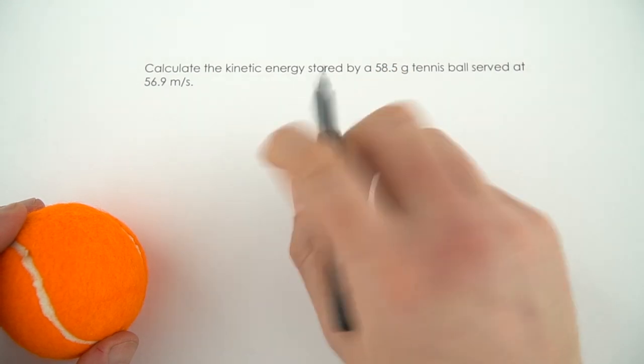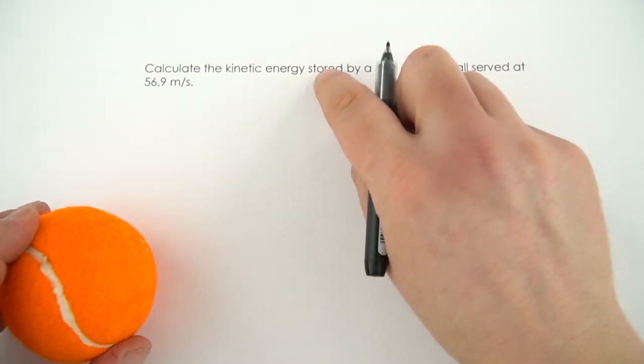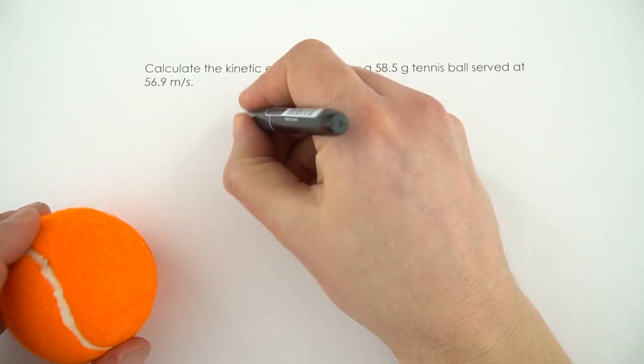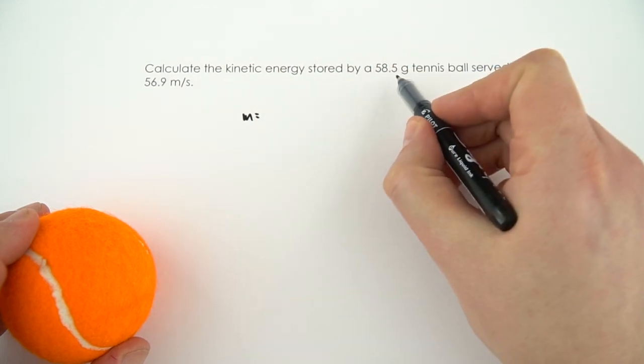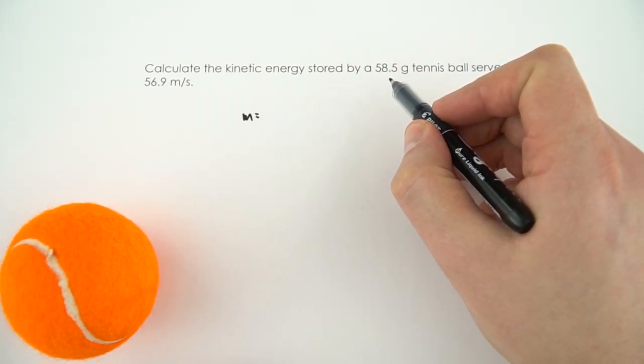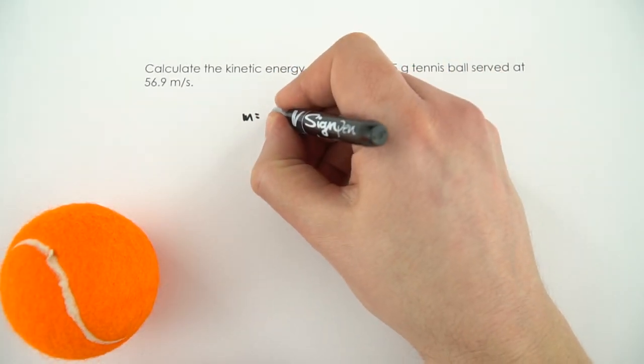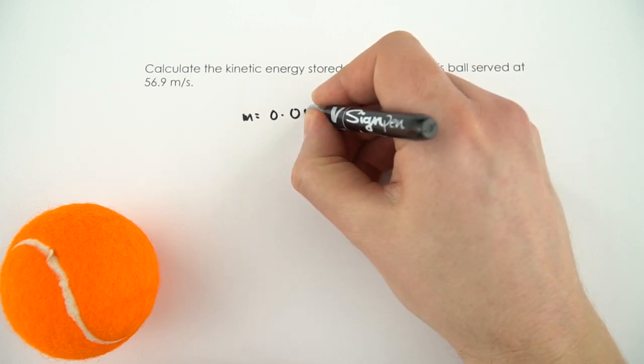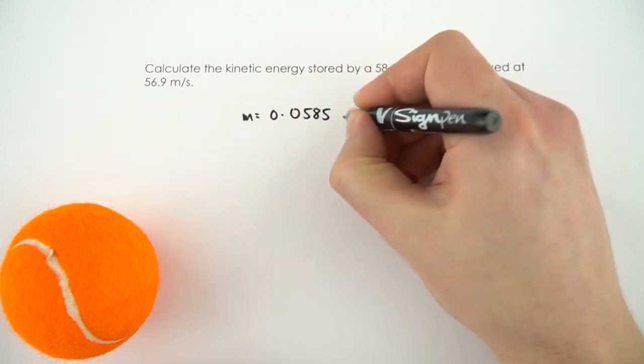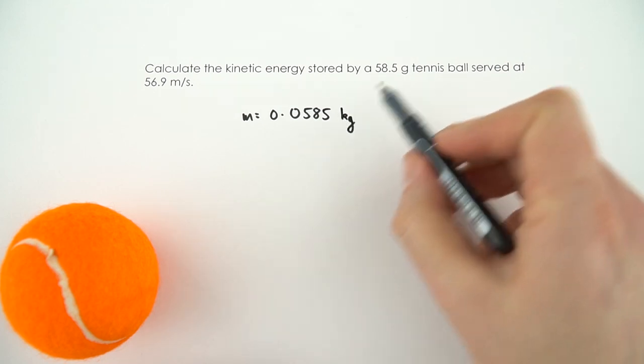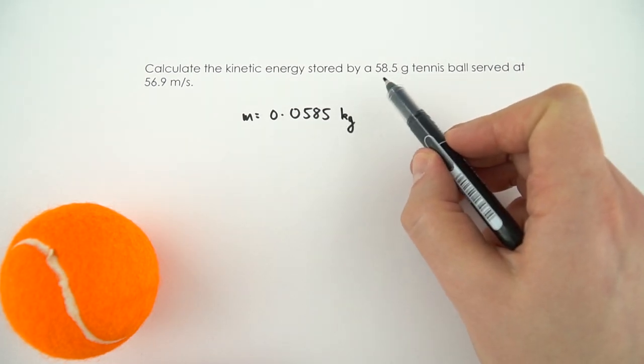So the first thing I'm going to do is write down what I know from the question. It says the mass is 58.5 grams, but we need to convert this into kilograms. So that's going to be the same as 0.0585 kilograms. If you're not sure how to do that, you can always just divide this number by a thousand.